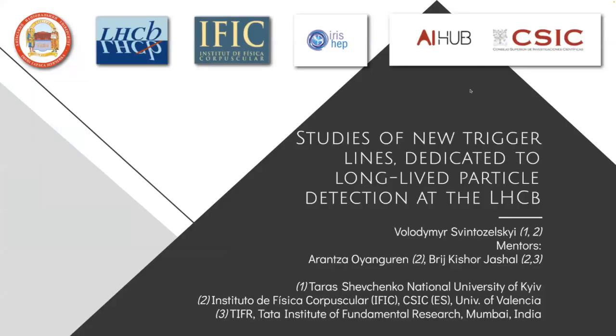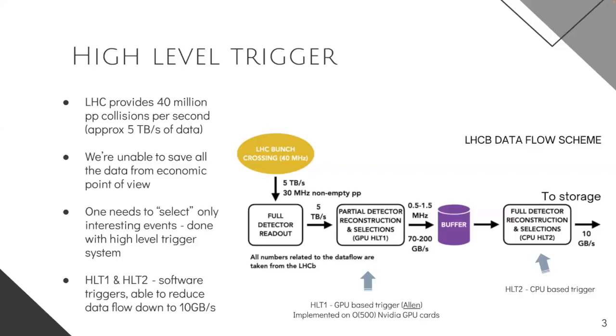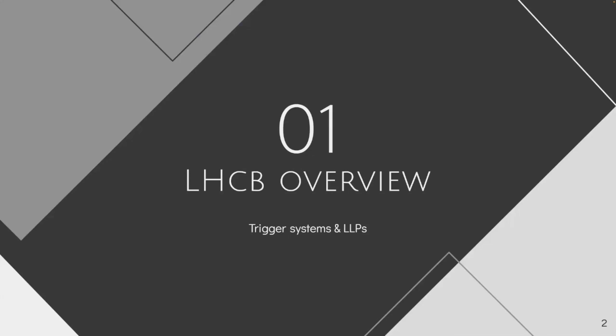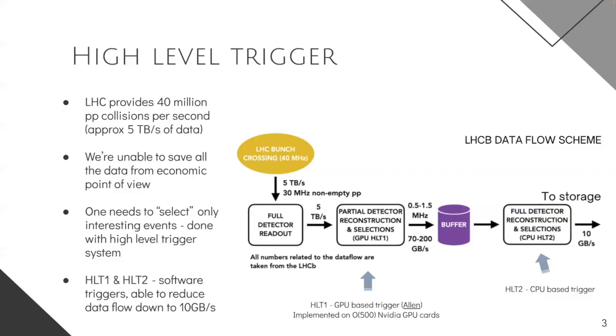But wait a bit. Okay. I have my control now. But before we move to that, I would like to talk a bit about the LHCb itself, and in particular about the LHCb trigger system and the long-lived particles. So the Large Hadron Collider provides 40 million proton-proton collisions per second, which is equivalent to approximately 5 terabytes per second of data coming from our detectors. And it's obvious that we are unable to save all this data from the economic point of view. And the problem is to select only the interesting events. And this job is actually done by hardware, sorry, by high-level trigger systems. At the LHCb we have two of them. We have HLT1 and HLT2. And together they are able to reduce the data flow down to 10 gigabytes per second.